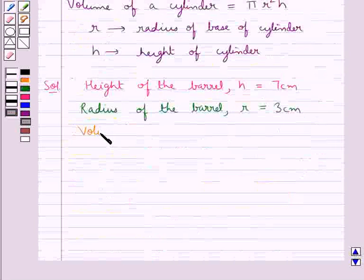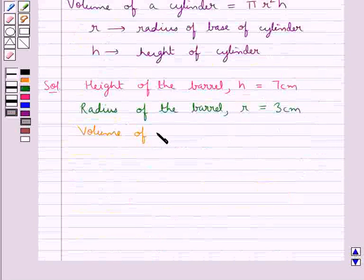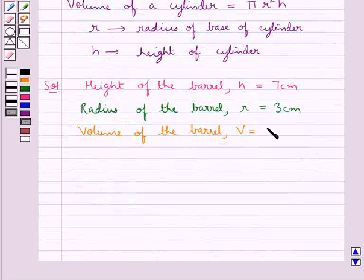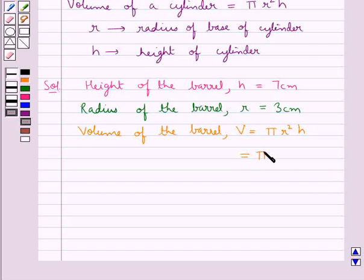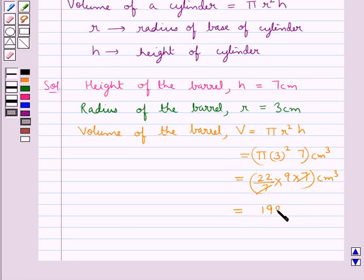Next we find out the volume of the barrel, V, is given as π r² h. So this is equal to π × 3² × 7 cm³. This is equal to 22/7 × 9 × 7 cm³. 7 and 7 cancels. And this is equal to 198 cm³ is the volume of the barrel.